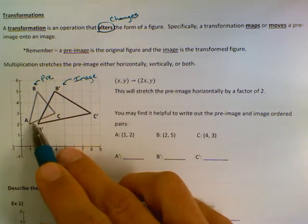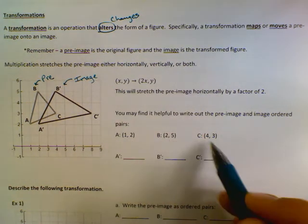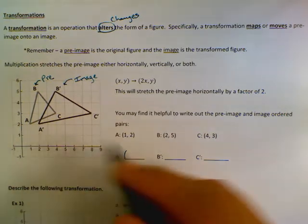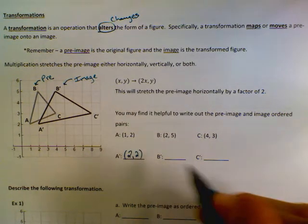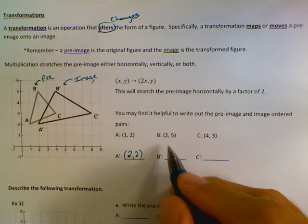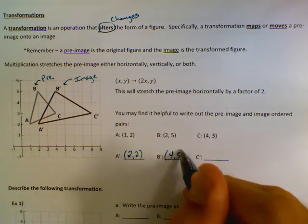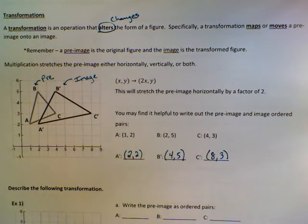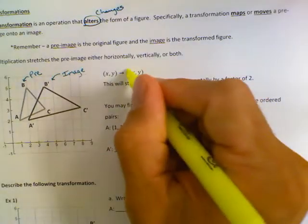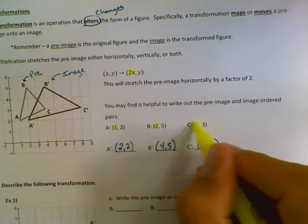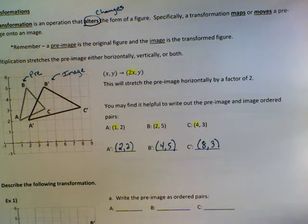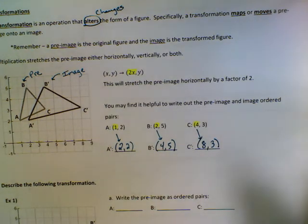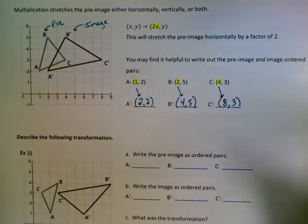So if you look at the ordered pairs A(1, 2), B(2, 5), and C(4, 3), and we write down what the coordinates are for A' it's (2, 2), B' is (4, 5), and C' is (8, 3). You can tell that I have multiplied all these x-values by 2. Multiplying by 2 gives me 1 times 2 is 2, 2 times 2 is 4, 4 times 2 is 8. So that just changes the x-coordinate.